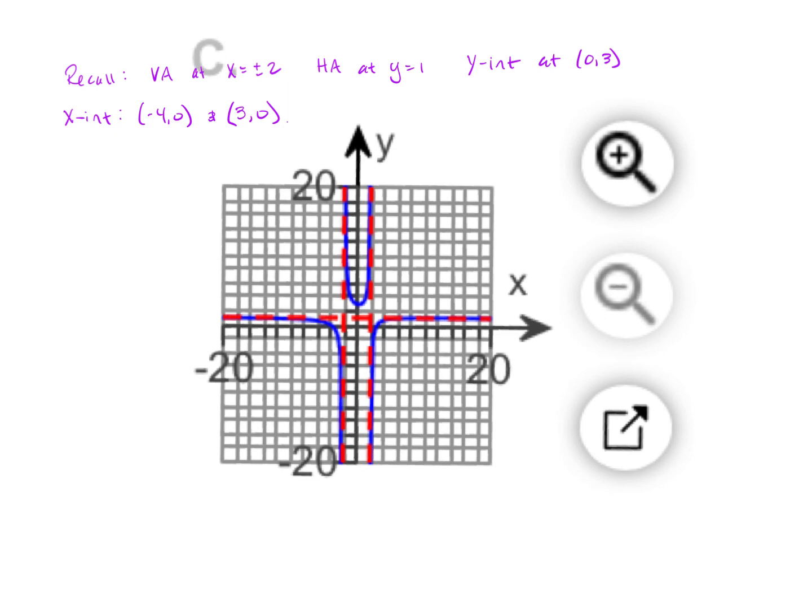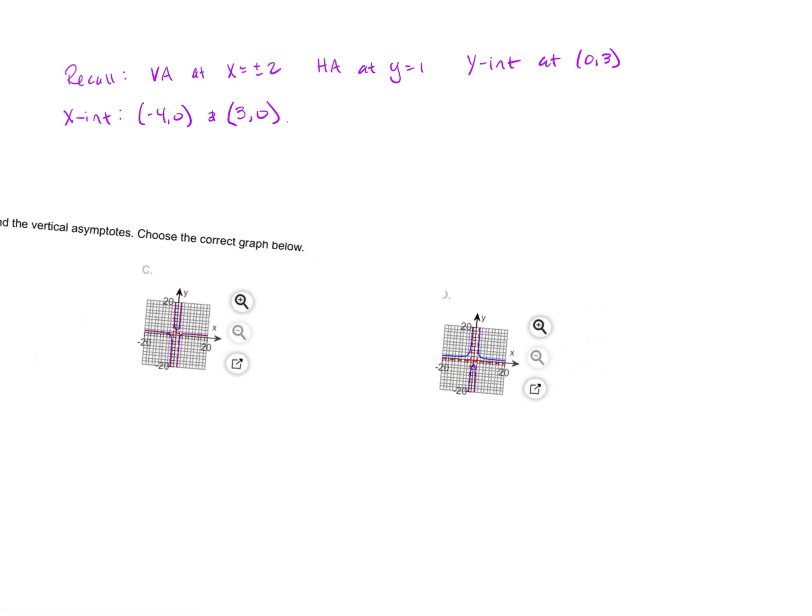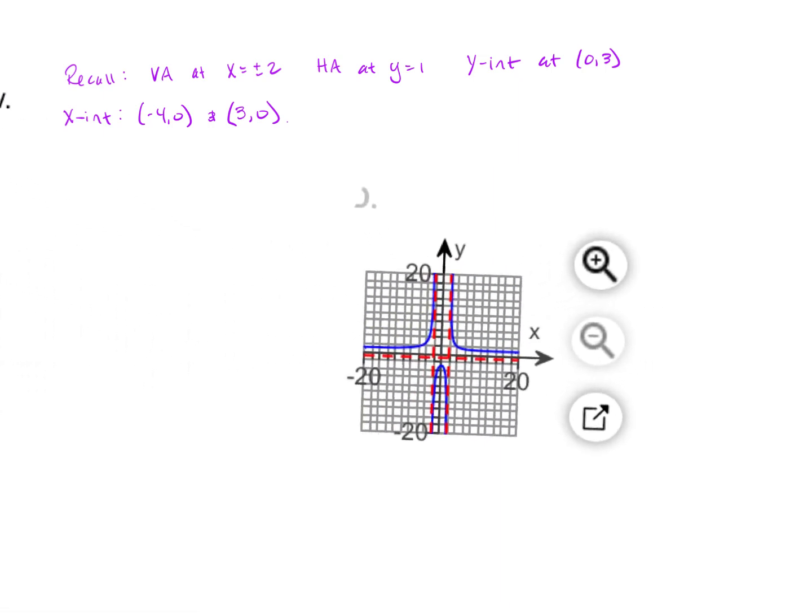I'm pretty sure that C is our choice here, but let's just look at D real quick and make sure we can eliminate it. Zoom in on D and see why this isn't the graph.